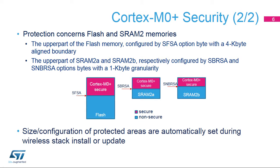Cortex-M0 Plus security protects upper parts of flash and SRAM2 memories. Sizes of each area are automatically set during wireless stack install or update. Secure Flash Start Address, or SFSA, is the lower boundary of protected flash memory, aligned on 4-kilobyte granularity. Secure Backup RAM Start Address, or SBRSA, and Secure Non-Backup RAM Start Address, or SNBRSA, are the respective lower addresses of protected parts of SRAM2A and SRAM2B memories.